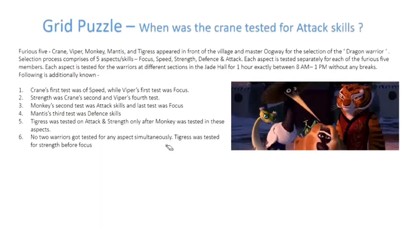Let's begin. Today we'll be solving a very interesting grid puzzle. Furious 5 - Crane, Viper, Monkey, Mantis, Tigress - appeared in front of the village and Master Oogway for the selection of the Dragon Warrior.